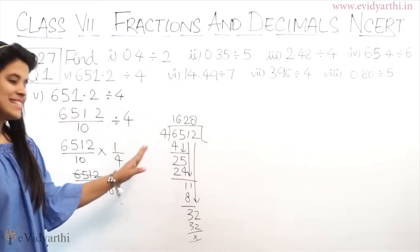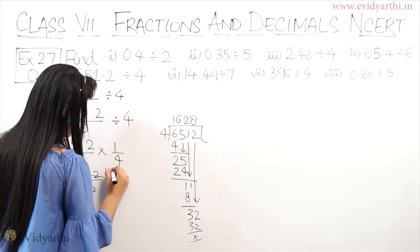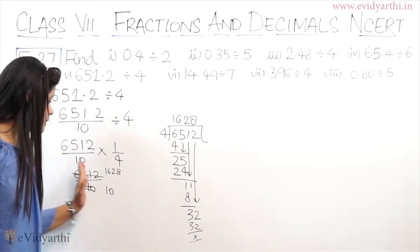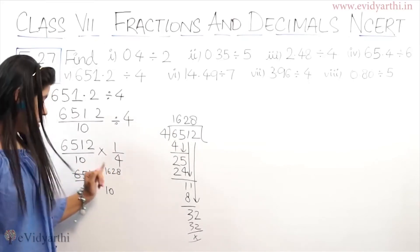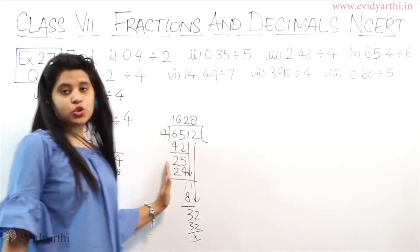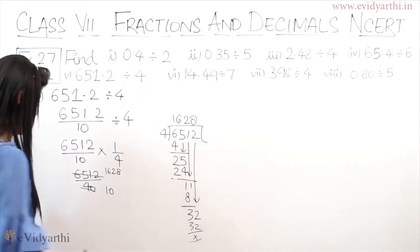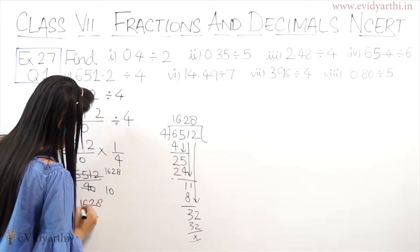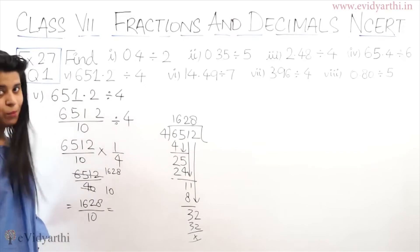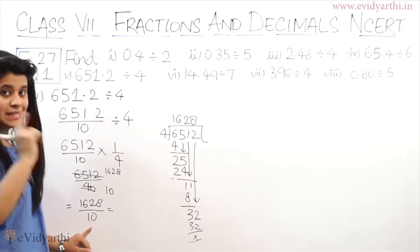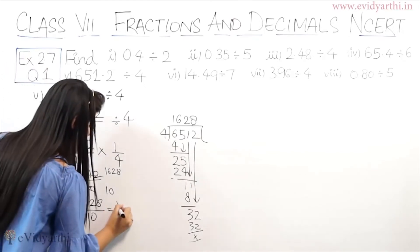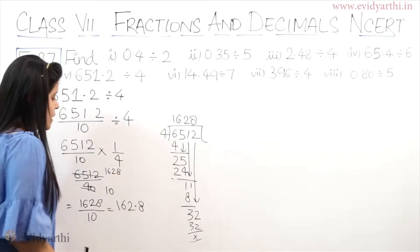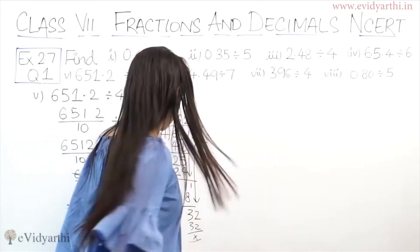So this will be 1, 6, 2, 8. So you should do division. So now we have to do 1628 upon 10. You should convert to decimal. So you should put decimal for one digit. So you should put decimal after one digit. So you will find 162.8. Now comes the next part.